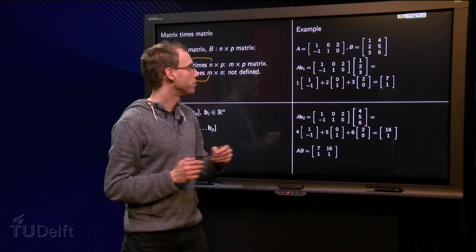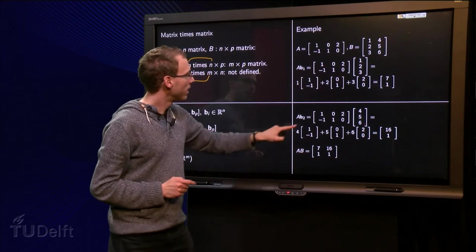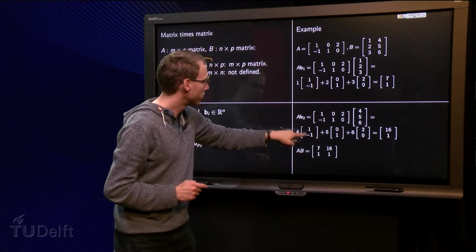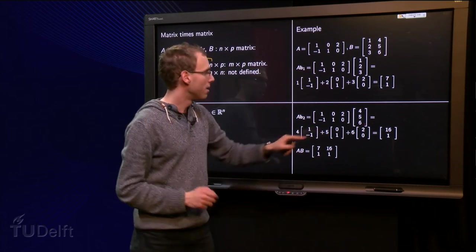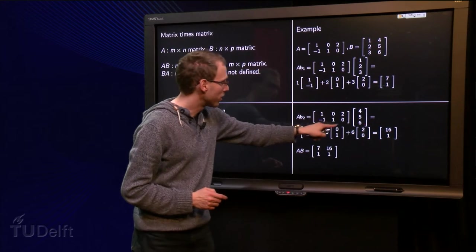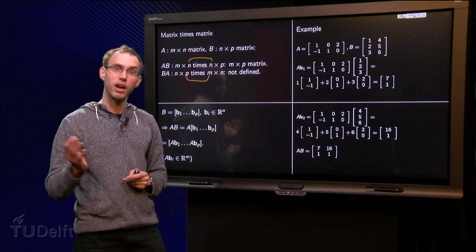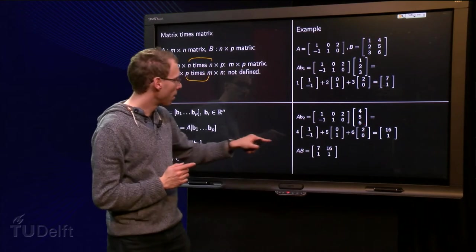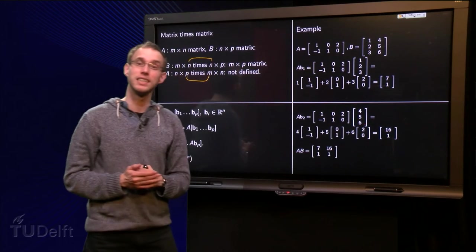And then we continue with A times B2. Here we have A again, B2 equals 4, 5, 6. A times B2, 4 times the first column of A, plus 5 times the second column of A, plus 6 times the last column of A, yields 4 plus 0 plus 12 equals 16, and minus 4 plus 5 equals 1. And there we have A times B2. So AB equals 7, 1 as first column and 16, 1 as second column.